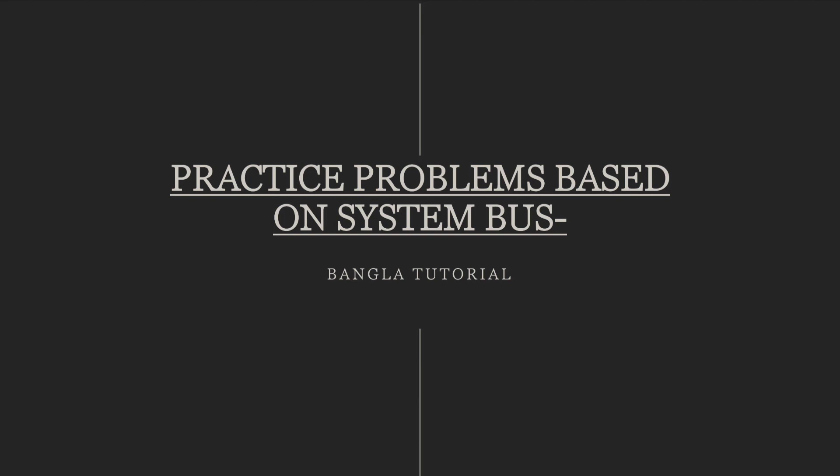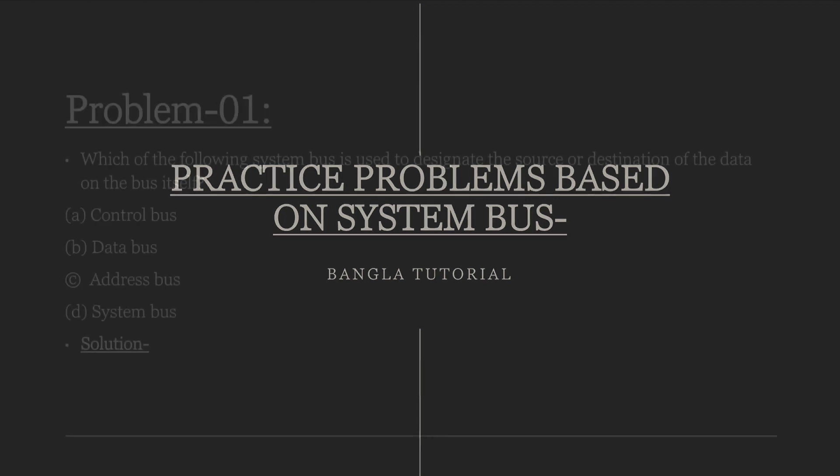In the previous video, I had asked a question about the address. We can do this — we can discuss it with the video. If we have a video, I need to solve the question easily. So you can see the answer to the next question. First of all, there is a problem: which of the following system buses is used to designate the source or destination of the data on the bus itself?